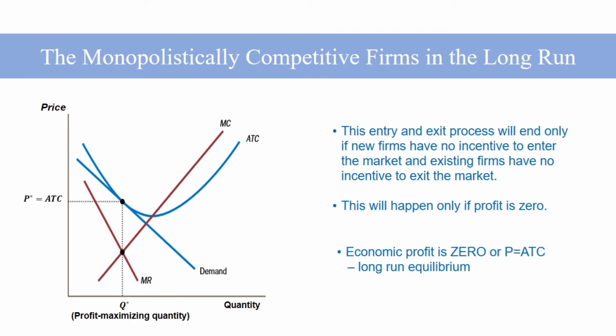This process of entry and exit continues until the firms in the market are making exactly zero economic profit. Thus, this situation portrays the long-run equilibrium. Once the market reaches its equilibrium, new firms have no incentive to enter and existing firms have no incentive to exit.